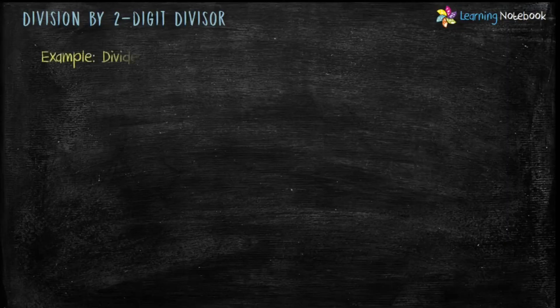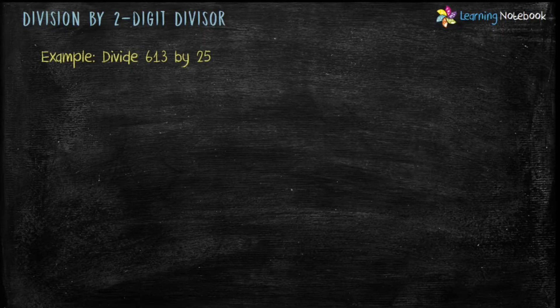I hope you have understood the method of estimating the quotient. It might seem lengthy, but if you practice it you can do it very quickly. Let's do one more question: divide 613 by 25 using the long division method.